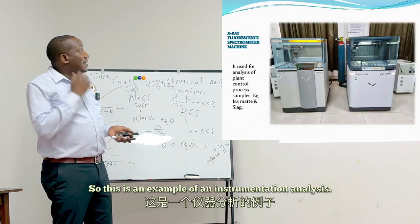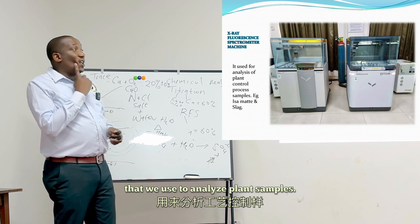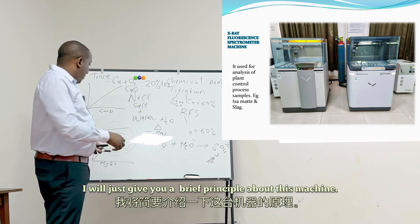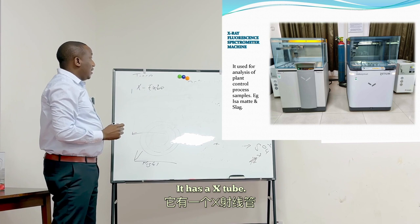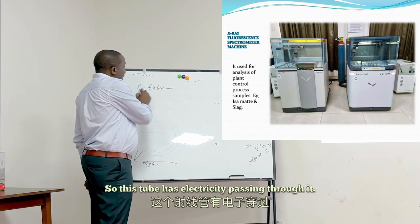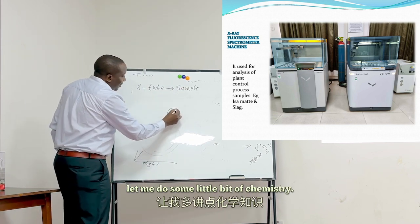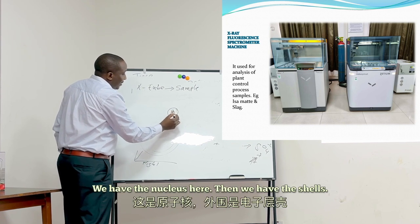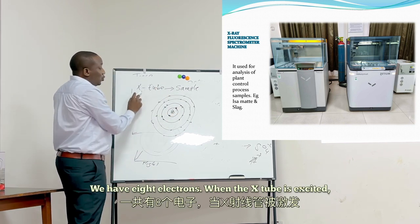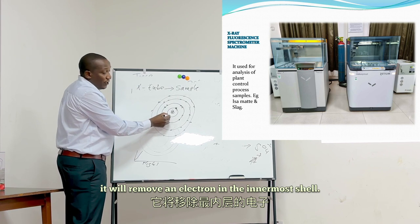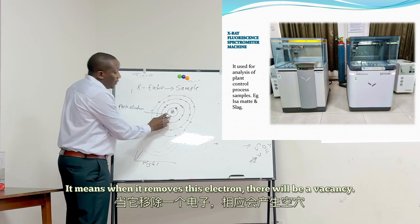This is an example of instrumentation analysis — the X-ray fluorescence spectrometry (XRF) machine, used to analyze plant samples. The machine has an X-ray tube with electricity passing through it. When it bombards a sample, it removes an electron from the innermost shell — a photoelectron. When this electron is removed, there is a vacancy and instability, so one of the electrons from an outer shell moves to cover it.